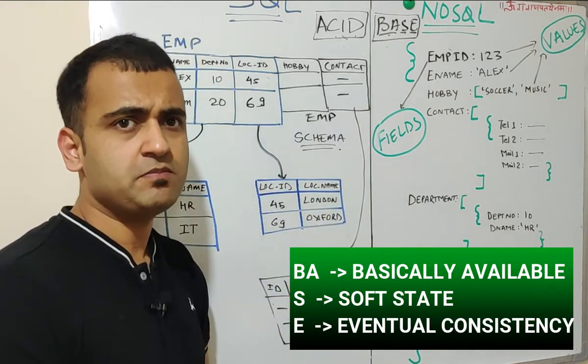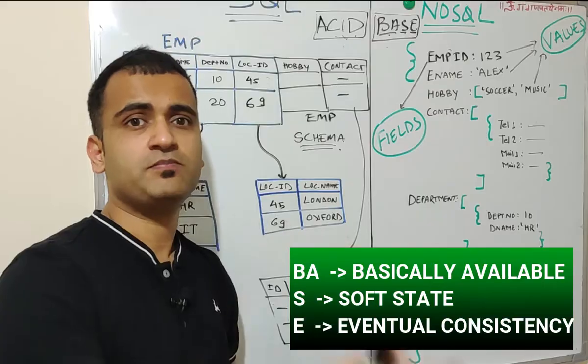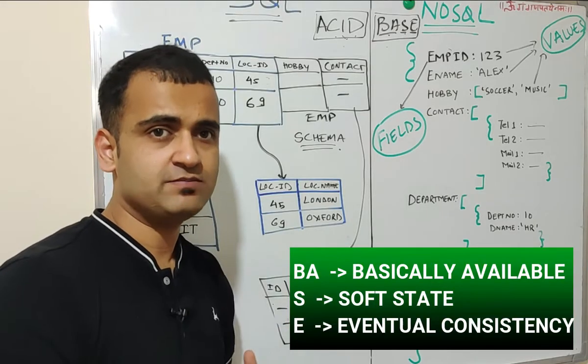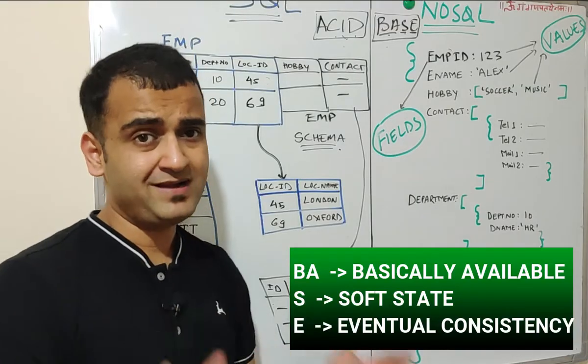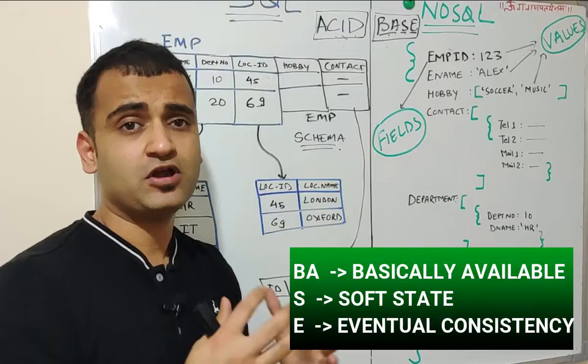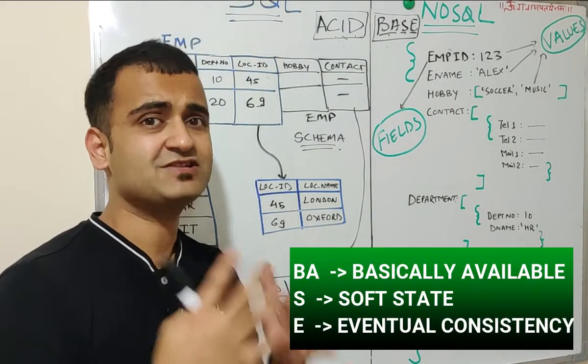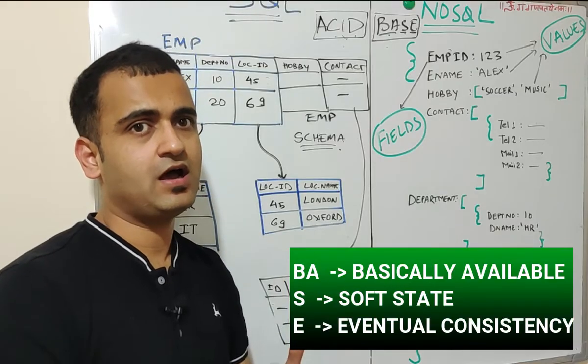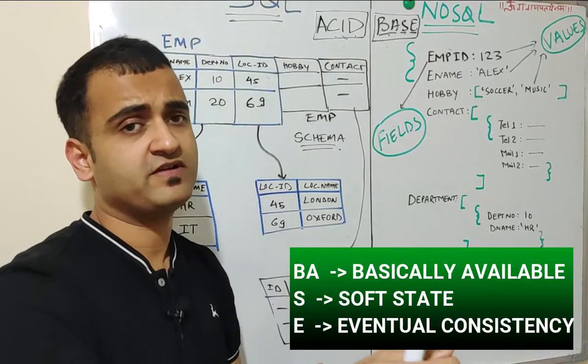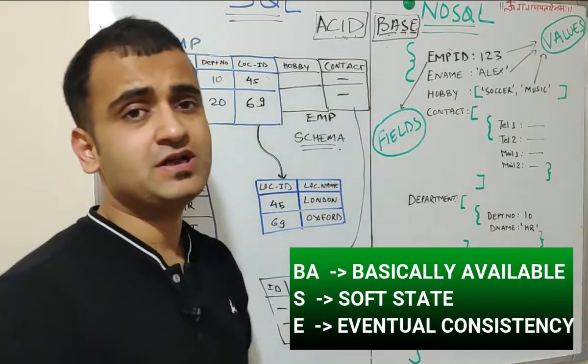Soft state. Soft state means that the data would continue to vary over the period of time. Because of its flexible database design, you might encounter that you might see changes very frequently in your data which is coming. So there will always be a soft state. That soft state means that the data could vary over the period of time very frequently.